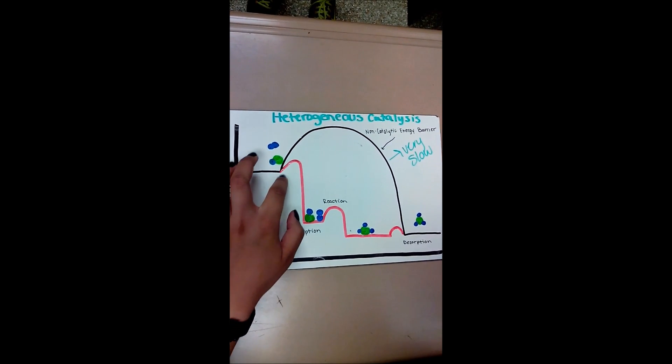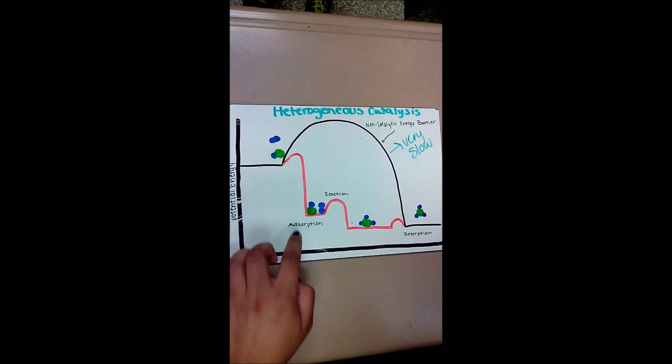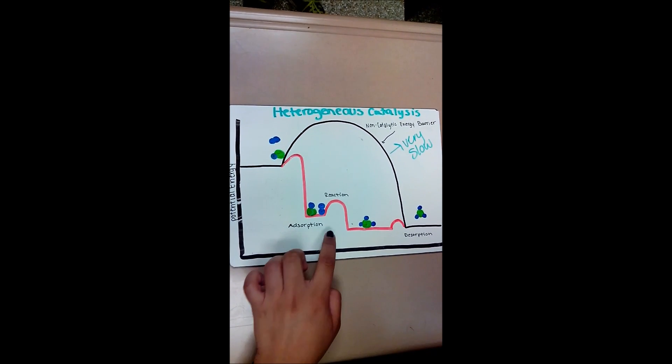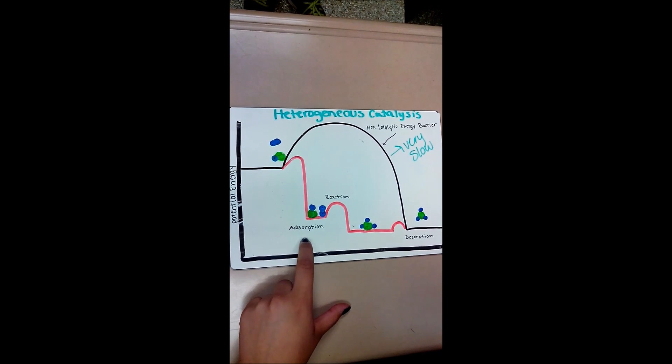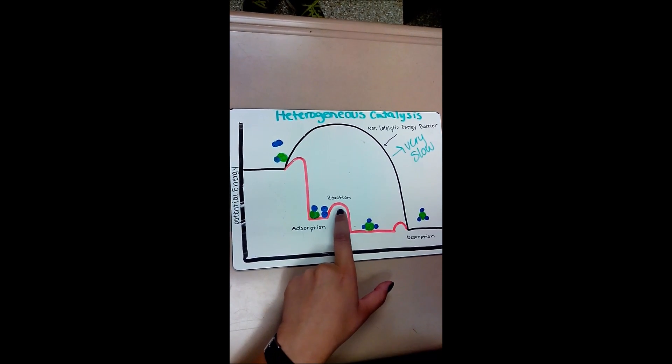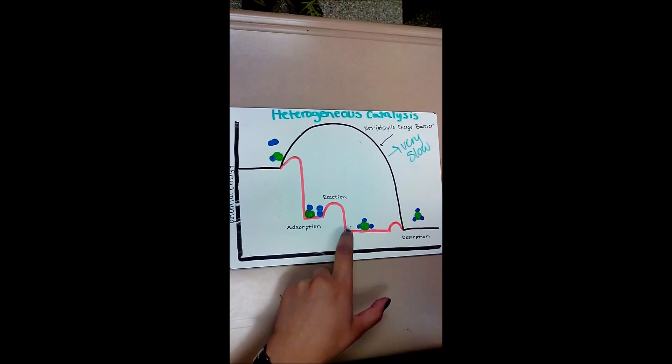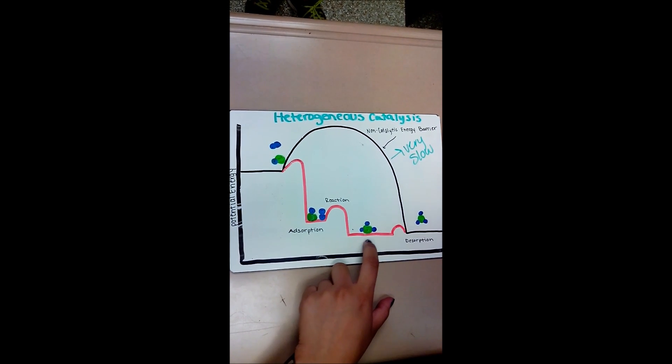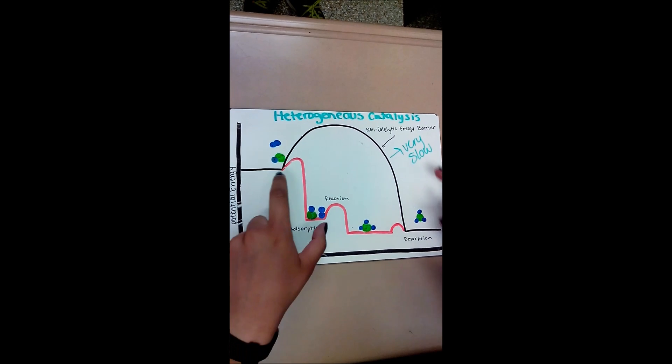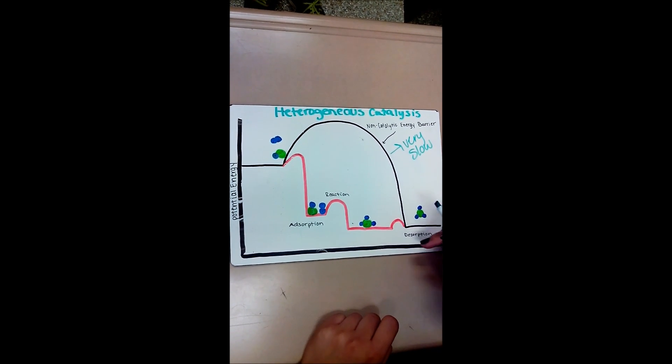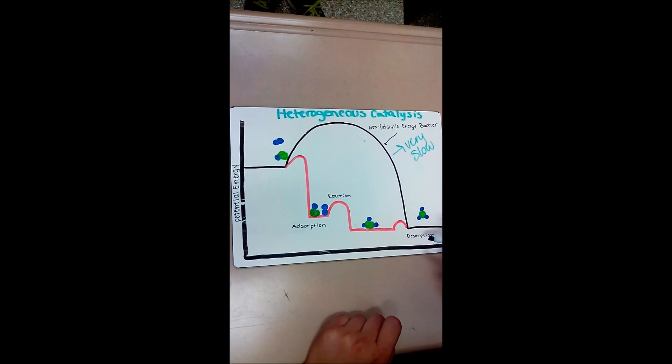But in adding a catalyst, it lowers the activation energy and the first step would be the adsorption, which refers to the binding of molecules to the surface. And then after that, it lowers down the activation energy even more until it creates the same product it would in either step, with the catalyst or without the catalyst. And that would be the desorption.